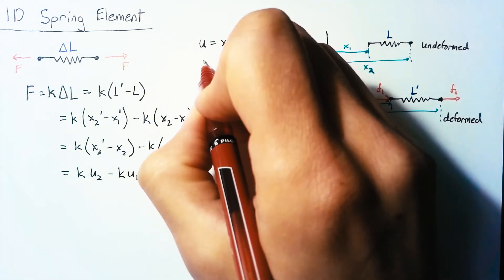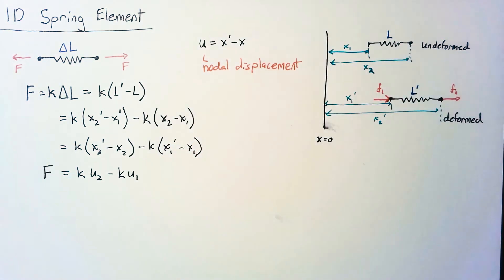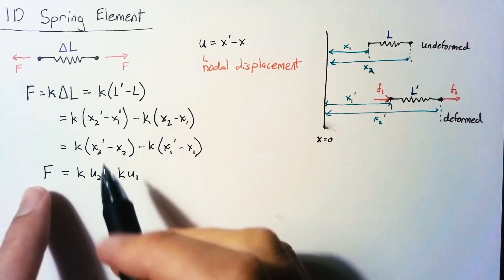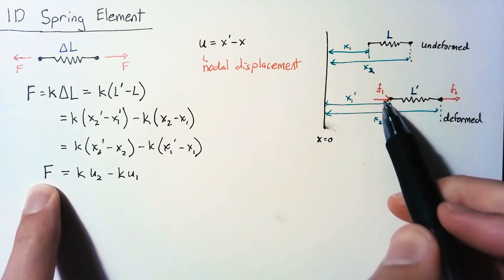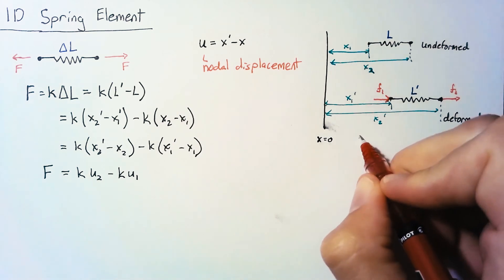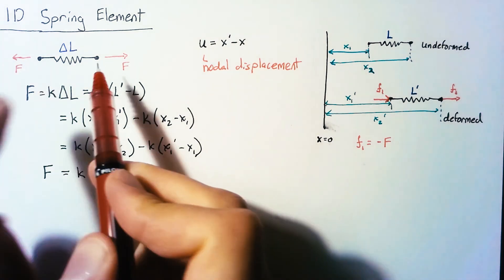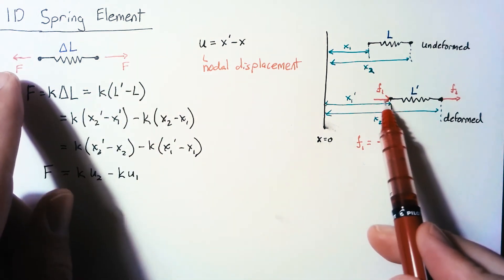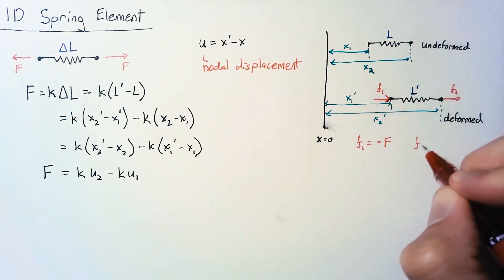And again u is known as the nodal displacement. So this next step is going to be a little unintuitive because we're going to take this one equation and actually create two equations out of it by looking at our two separate forces. So our f1 here is simply equal to negative f since we are looking at a tensile force and f1 is a compressive force. f2 is equal to positive f because they're both tensile.